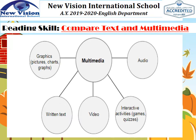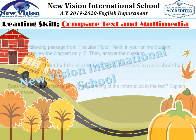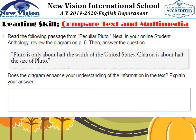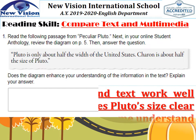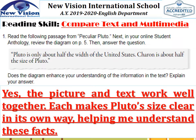For the given instructions, number one, read the passage and write the answer in the box. Pluto is only about half the width of the United States, and Charon is about half the size of Pluto. The question is: does the diagram enhance your understanding of the information in the text? It's a yes. The picture and text work well together — each makes Pluto's size clear in its own way, helping you understand how small Pluto is.